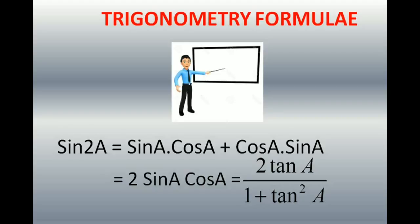Further, sin 2A can be written as 2 tan A / (1 + tan²A). The application of this formula follows a pattern: sin A = 2 sin(A/2) · cos(A/2), and sin 4A = 2 sin 2A · cos 2A. If you identify the pattern, the formula and its application become very easy.